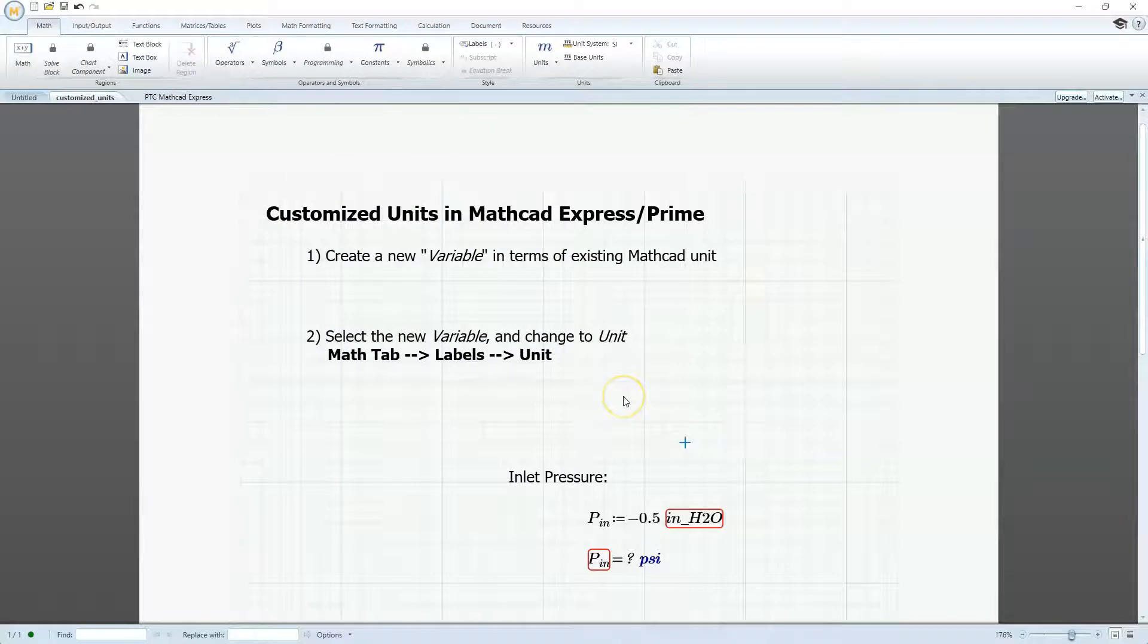In this example, we want to add inches of water for a unit of pressure. So what we're going to do is create a variable, or at least start by creating a variable, and we'll call it InchH2O, and we'll set this to be 0.0024583 atm.